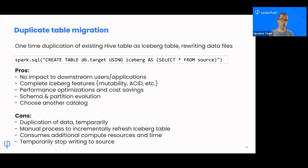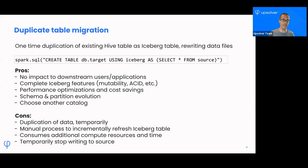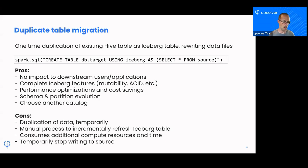There is a manual process here if you want to incrementally refresh the Iceberg table, because the migration happens once. Once you do this create-table-as-select from the source, that's done. If your Hive table just got a bunch of new data, you need to write an incremental query that inserts into the Iceberg table. Not that hard to do, but it is something you either have to manually write or schedule to run periodically.